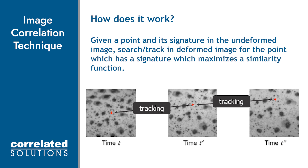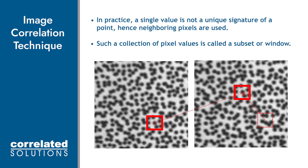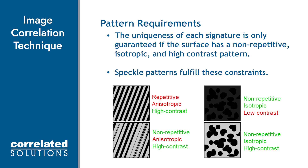Digital image correlation works by tracking points on the test specimen surface that are unique from one another. For this reason, we must apply a speckle pattern to the surface. The speckle pattern provides unique features and markers to track points throughout the surface. The way we track points is by tracking groups of neighboring pixels which we call subsets. The subset size is user defined and should be large enough to provide unique speckle information for all the subsets throughout the surface, while remaining small enough to provide good spatial resolution. In order to provide unique enough information to track every data point or subset, a pattern should be non-repetitive, isotropic, and high contrast.